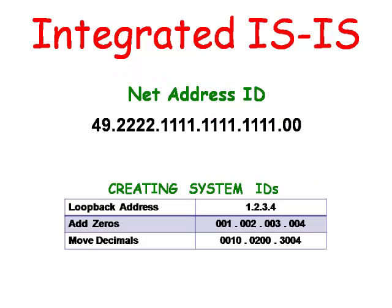The net ID that we will be using is created by typing the number 49, followed by the area number, followed by the system ID, and followed by 00. For example, if the router is in area 2222 and is given the system ID of all ones, the net ID will be 49.2222.1111.1111.0. The beginning number of 49 refers to the private address space and the 00 at the end refers to the router.